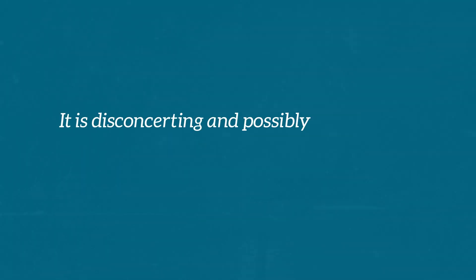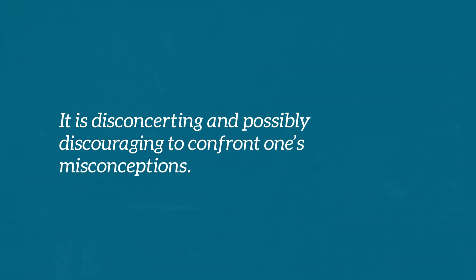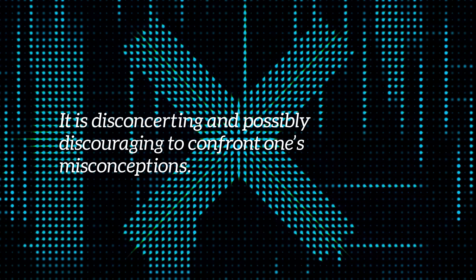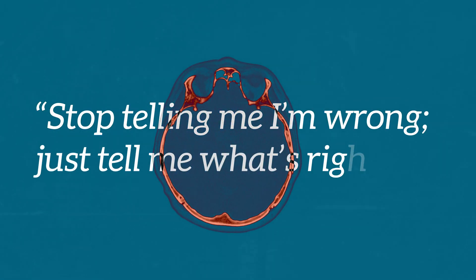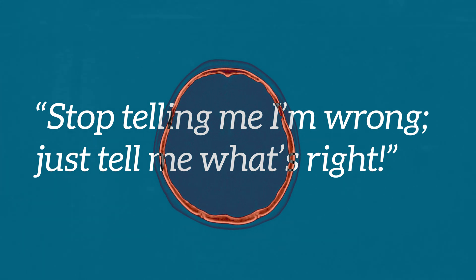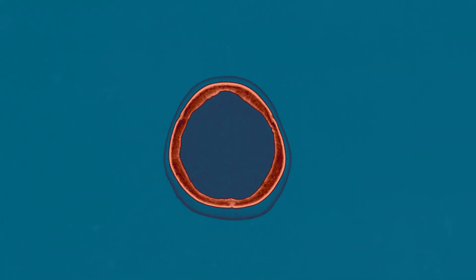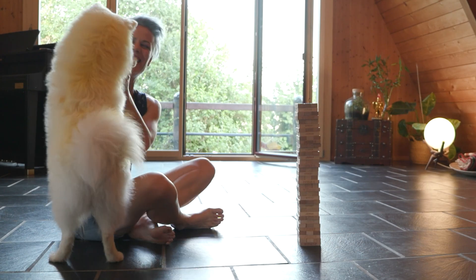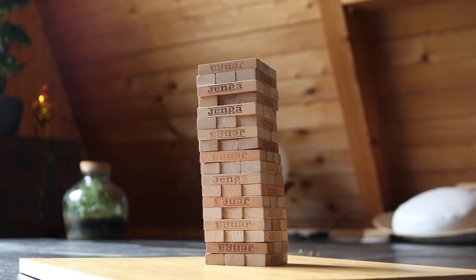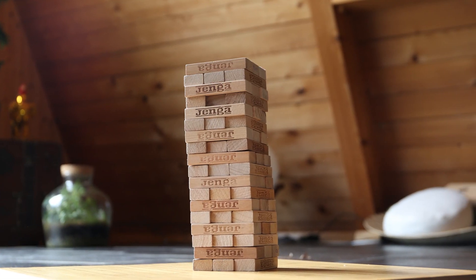Your students may not like this approach, and that is understandable. It's disconcerting and possibly discouraging to confront one's misconceptions. The students might come away feeling that they're always wrong, saying 'stop telling me I'm wrong — just tell me what's right.' If you do that, though, they may never dislodge their little compartments of misconception. You will have to push them, but be gentle and never be smug about it. The rewards are great: the students may now construct huge, stable Jenga towers of knowledge.